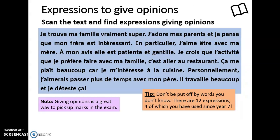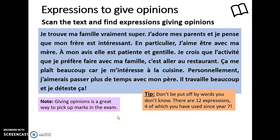What I've got here is a text in French, and what I'd like you to do is scan the text and find all the expressions which give opinions. Now, there'll be some words here that you don't know, and that's fine because it's a GCSE text — I'm not expecting you to understand everything in Year 9. My tip is: don't be put off by words you don't know. In total, there are 12 expressions to give opinions in here, and four of them we've been using since Year 7 — the ones saying what you like or dislike something. Hint. Pause the screen here and try to write down the 12 French expressions you find in the text.